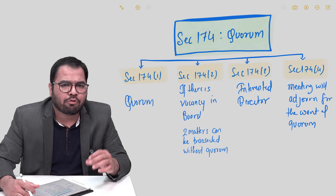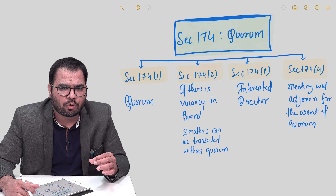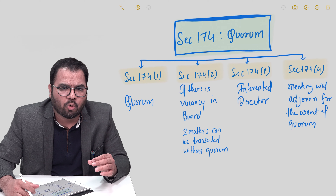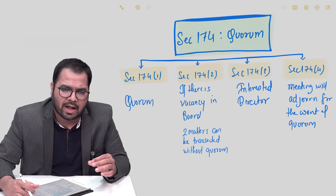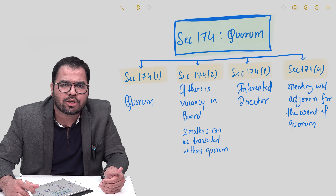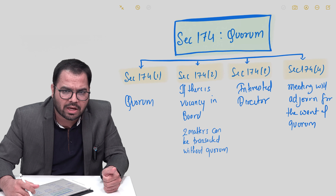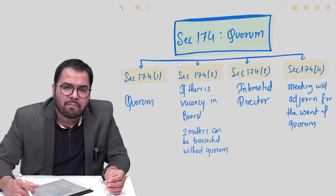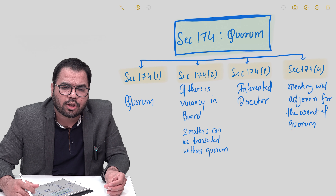Section 174 subsection 1 provides for the quorum of the board meeting. And for that matter, it actually covers the board of directors and subcommittees as well. Subsection 1 tells us the minimum number of directors required so that the board meeting can be conducted.